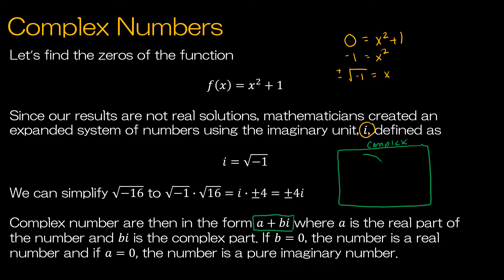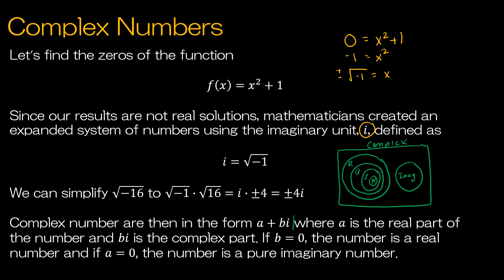Within the complex numbers, we have the real numbers. Within the real numbers, we had rational numbers, and within the rational numbers, we had the integers, and within that, we had the natural numbers. But we can also, within the complex numbers, have just imaginary numbers. The imaginary numbers are when just the a value is 0, so it's just bi. The real numbers are when b is 0, so it's just a. But the rest of the complex numbers are all in the form a plus bi, where a and b are not 0.